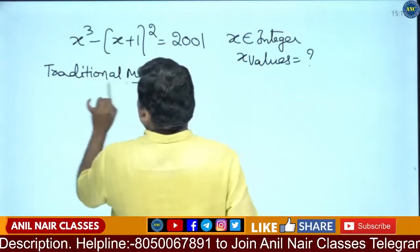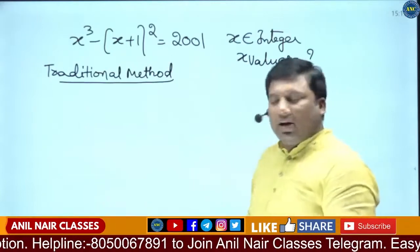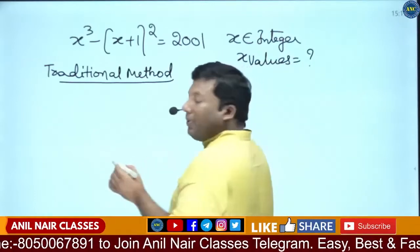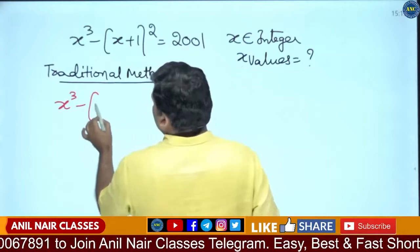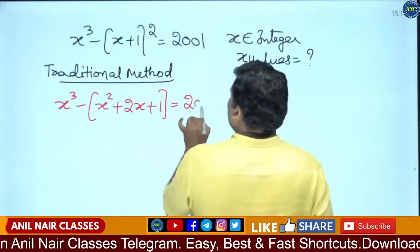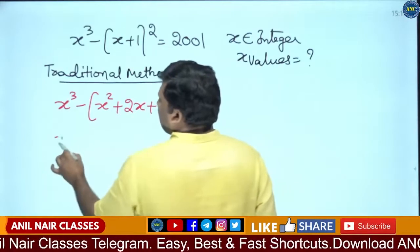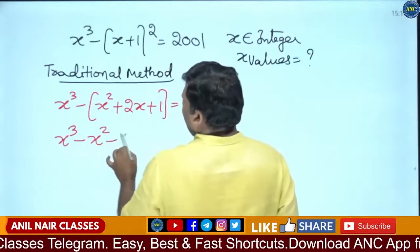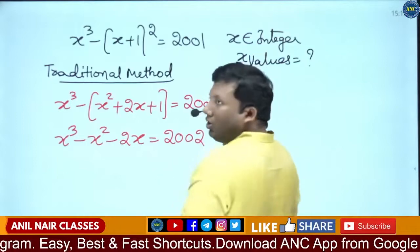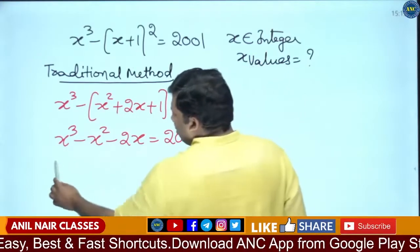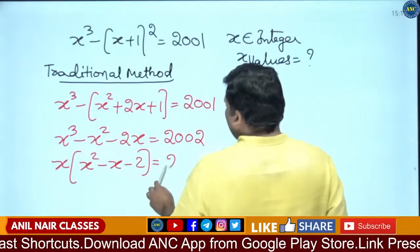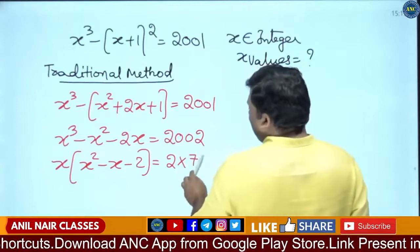Traditional method — listen carefully. x cube minus (x plus 1) whole square equals 2001. What people will do is they will open up the bracket: x square plus 2x plus 1. So it becomes x cube minus x square minus 2x minus 1, and the right hand side becomes 2001 plus 1, which is 2002.